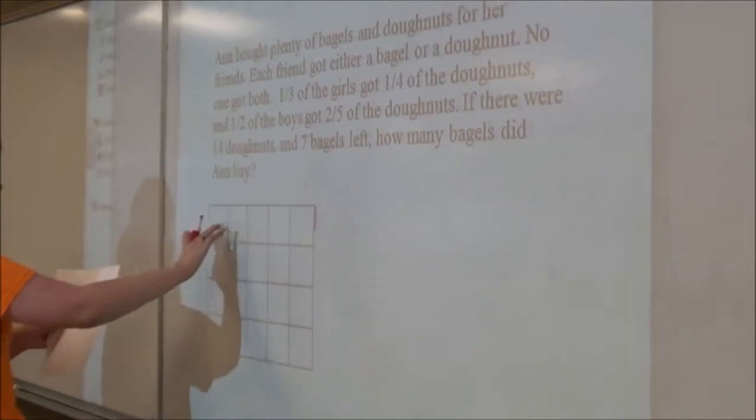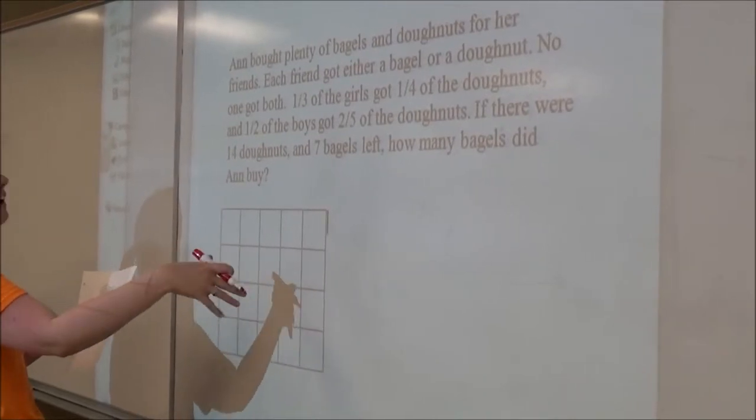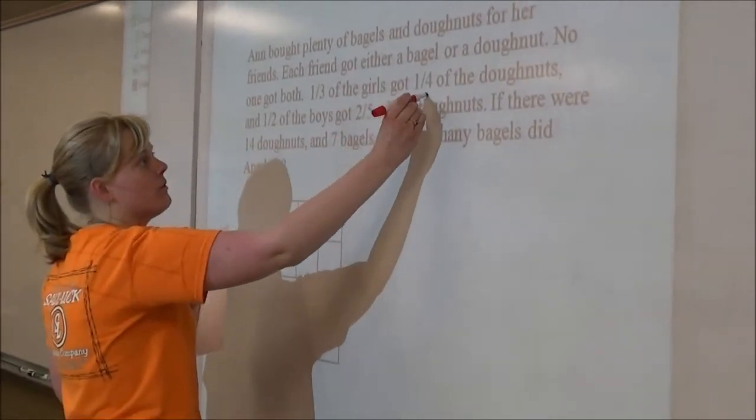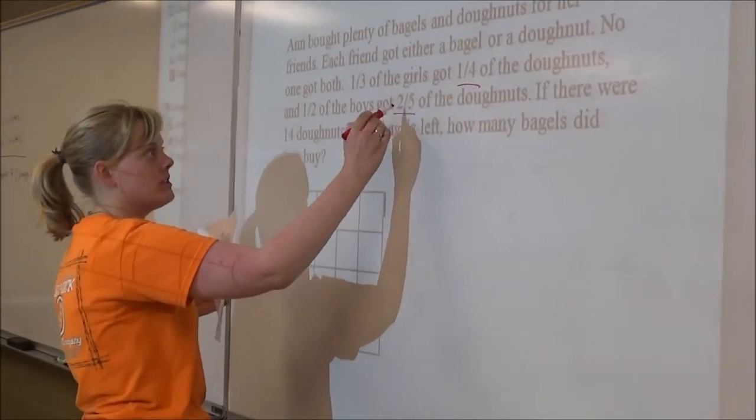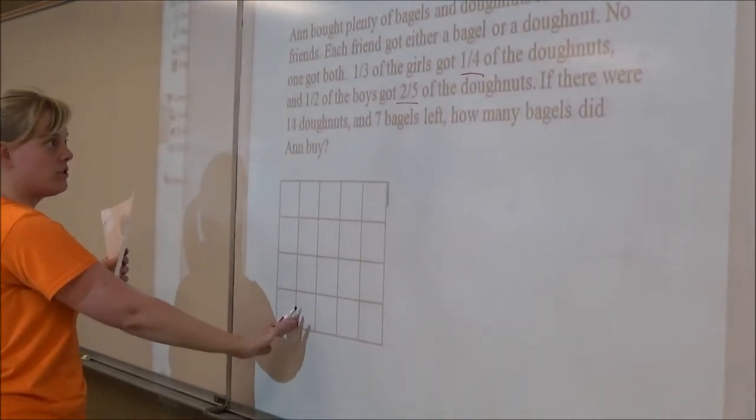If you started off with 20 boxes of 4x5, because you have one fourth of the girls, one fourth of doughnuts mentioned, and you have two fifths of doughnuts mentioned, so it's good to start off with 20.